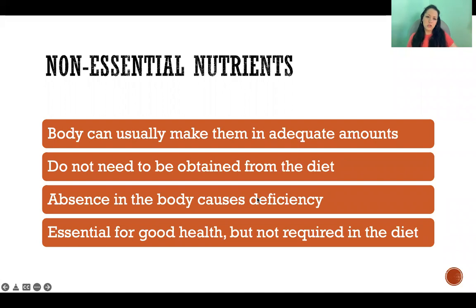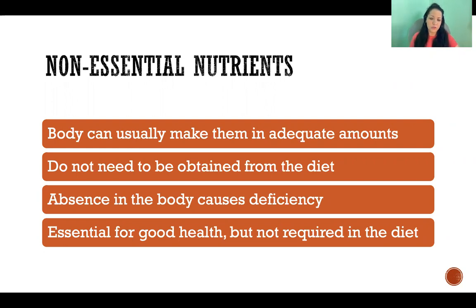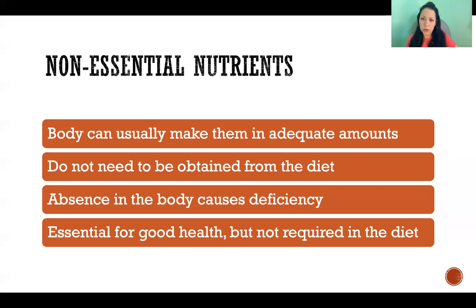A non-essential nutrient is a chemical that is a nutrient — so it is required for good health — and if we don't have it for a long enough time, it will cause a deficiency disease. But the difference is that we can produce it. Non-essential nutrients are chemicals that the body usually produces an adequate amount of, so we don't have to get it from the diet.